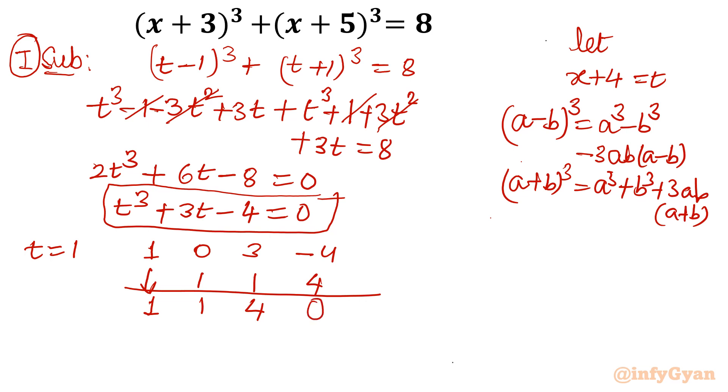So our factorization of this cubic equation will come out. If I will write it, then it will become t minus 1 times t square plus t plus 4 equal to 0.